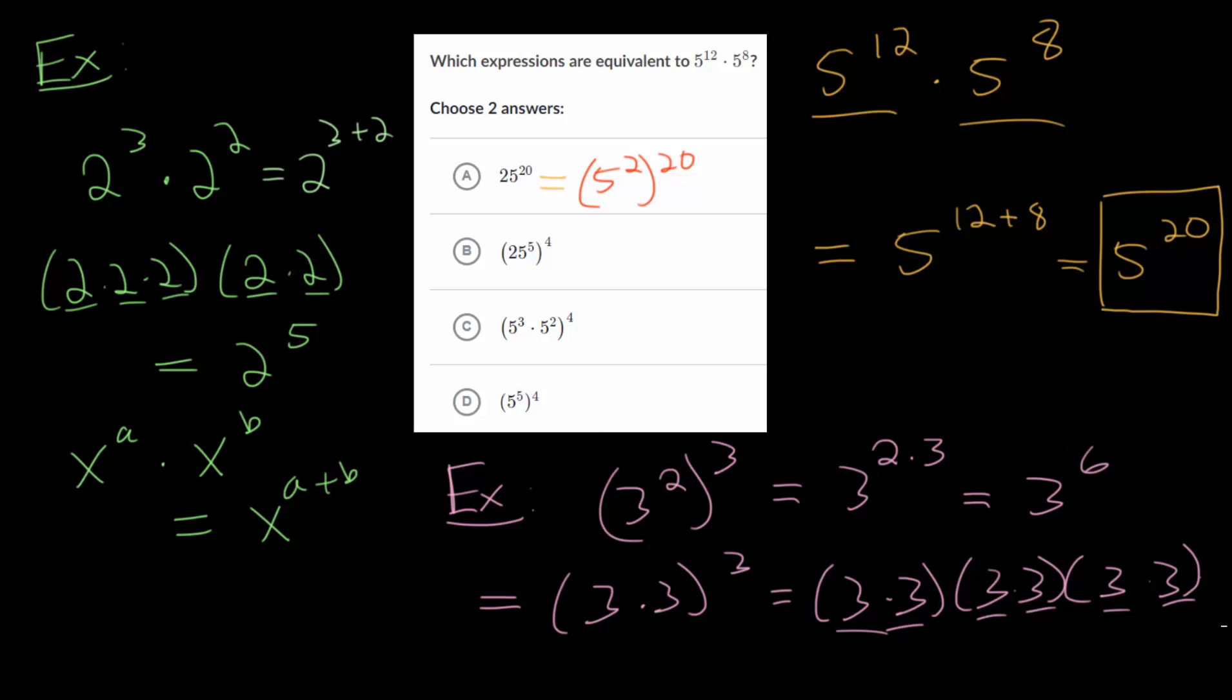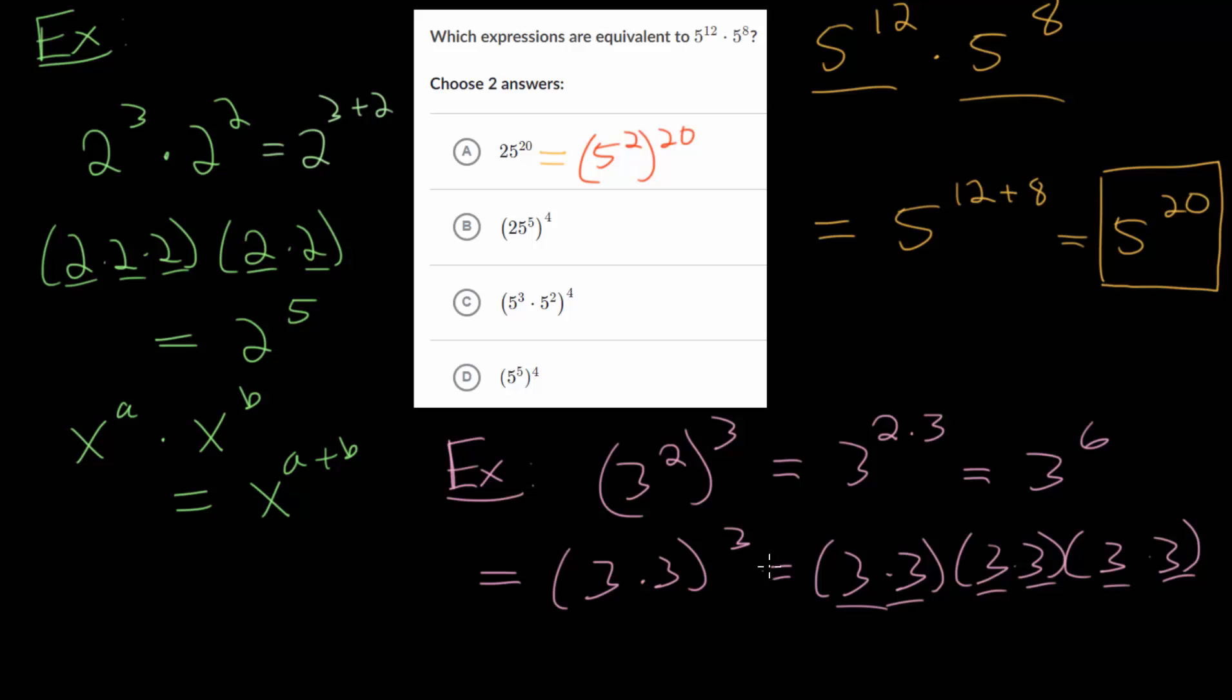You could write this generally as well. If you had x to the a all raised to the b power, this is really just x to the a times b. So we could apply that property here. 5 squared to the 20th is really just 5 to the 40th, which is quite different than what we have. In fact, there's an extra 25s multiplied together in this expression.